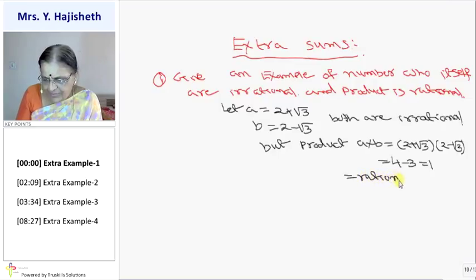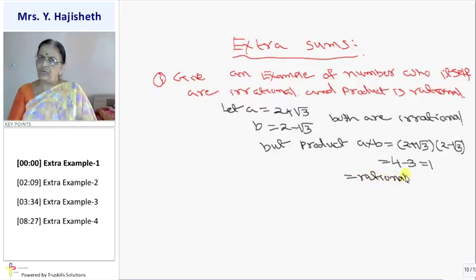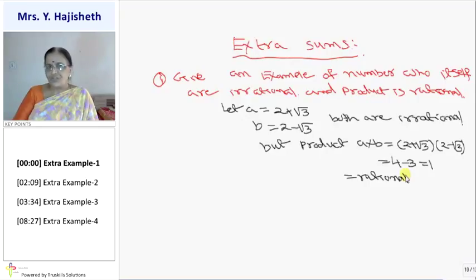It is a, both are examples you can give. 2 plus root 3 instead of 5 plus root 5, 5 minus root 5, 7 plus root 2, 7 minus root 2. Or A is root 2 and B is root 8, 2 root 2. Then their product is also 4. There are many sums you can give.